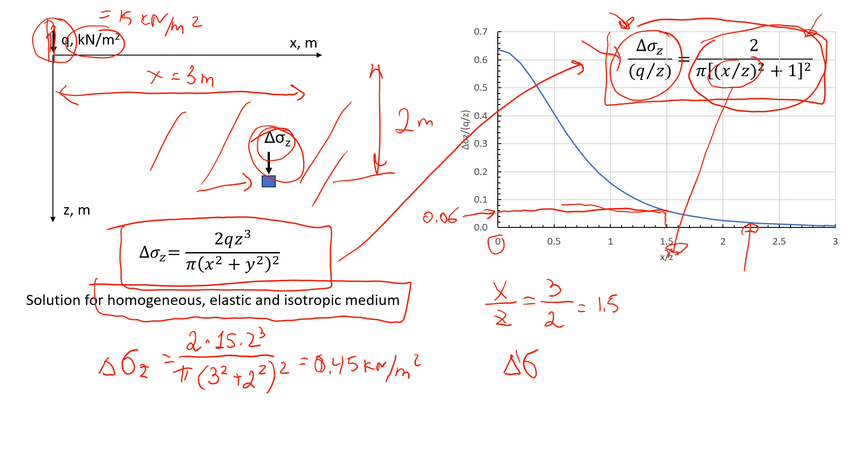Now we can say that Δσz divided by (q/z²) equals 0.06. With q = 15 and z = 2, we can find that the change in vertical stress, Δσz, is approximately 0.45 kilonewtons per square meter, which is exactly the value we obtained using the formula.